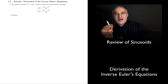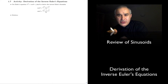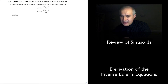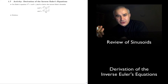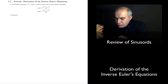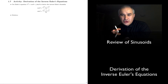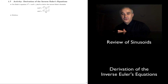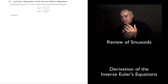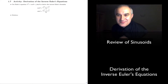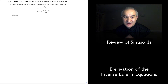Hello and welcome back. We are continuing with our basic review of sinusoids. In this activity, we are going to use Euler's equation to show that a cosine is actually made of two fundamental exponential sinusoids, and the same thing for the sine. Let's do here an engineering proof.